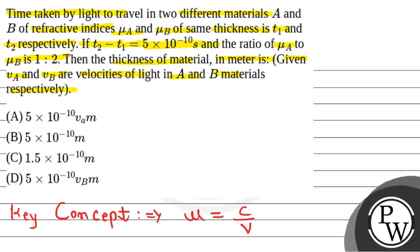This formula is for both. We have two lights there, so we have both refractive index ratios. That is mu A by mu B equals C divided by VA divided by C divided by VB. C cancels out, so this equals VB by VA.